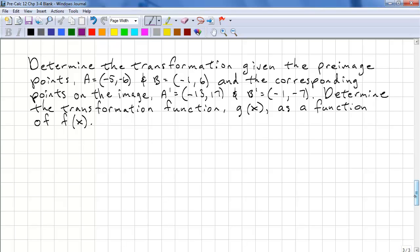Let's look at the last type of problem. And it's arguably the most difficult one. We have points that are given and we need to find the coefficients for the transformation. So here's an example. We have A as (-5, -6) and B as (-1, 6). A' is equal to (-13, 17). And B' is equal to (-1, -7).